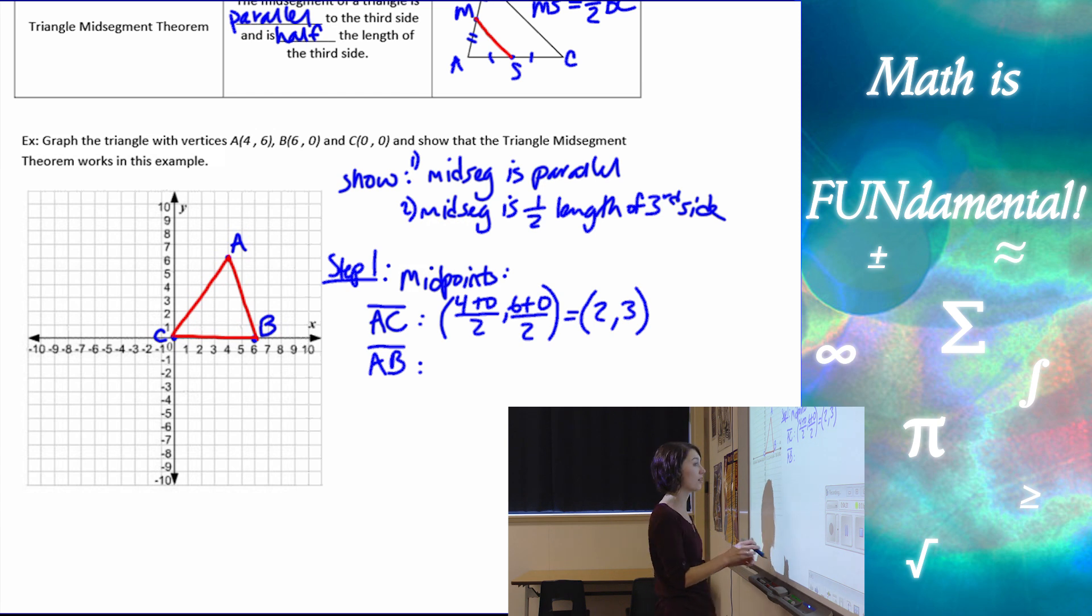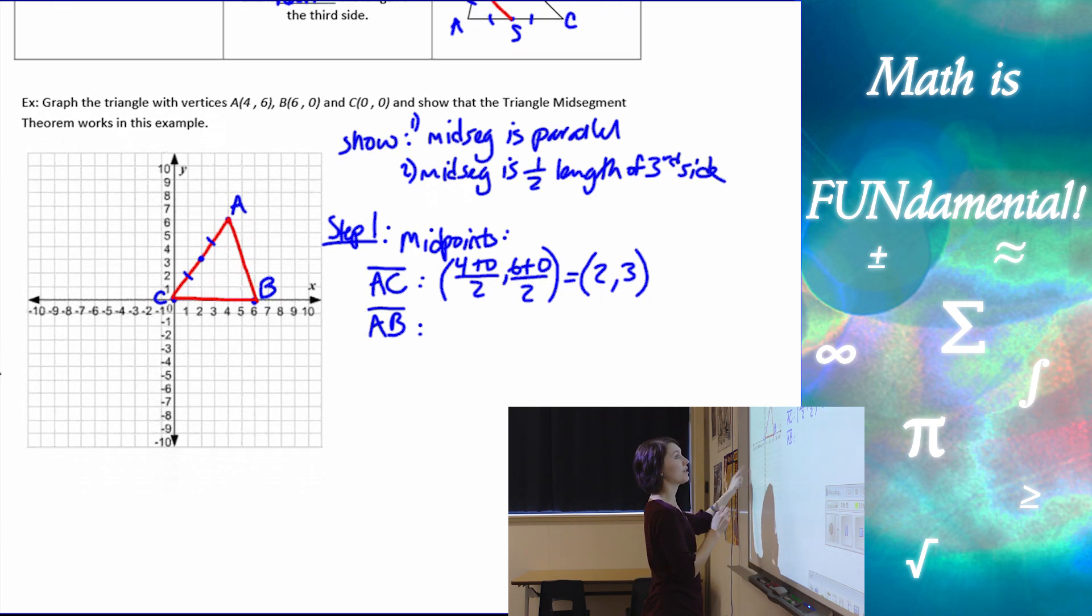And let's just check on our graph that we did that correctly. So if I graph the point 2, 3, it's right there, and sure enough, that looks like the middle of AC to me. Alright, we do the same thing with AB.